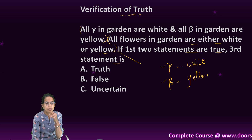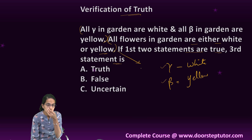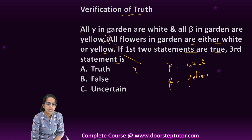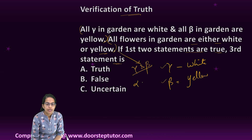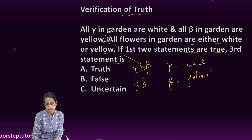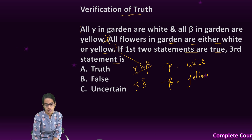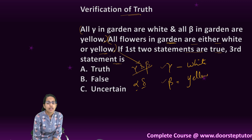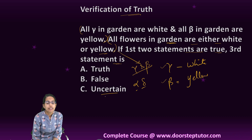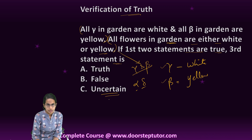All flowers in the garden are either white or yellow — I cannot say that. Why? Because it is nowhere mentioned that in the garden there are only gamma and beta. There could be alpha, theta, or any other kind of plants. So it is not mentioned that this garden has only two types, gamma and beta, and therefore this third statement is uncertain.